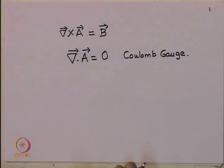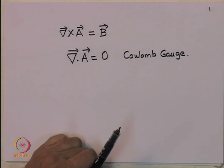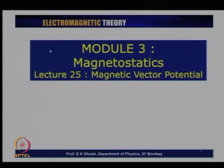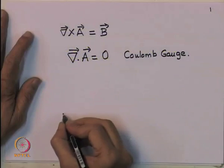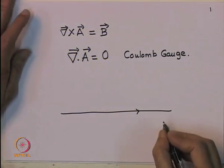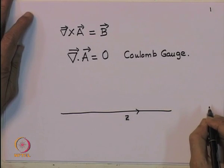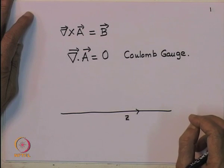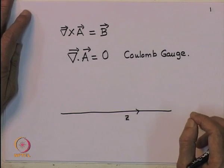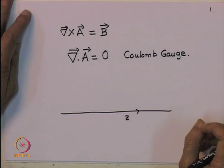What we will do today is to continue this discussion of the magnetic vector potential and calculate it in a few cases. The first simple example is to calculate the magnetic vector potential for a long current-carrying conductor. Let us take the direction of the current to be along the z direction, and this conductor is infinite. There is a strong relationship between the vector potential and the current density, and we expect the vector potential to be in the direction of the current.